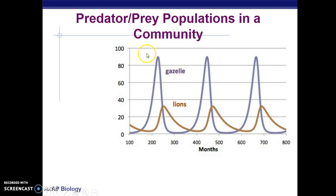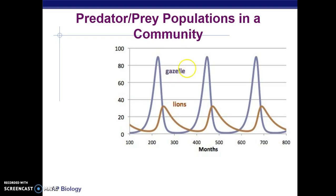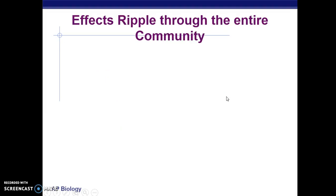If all the gazelles go down, the lions will have nothing left to eat. Similarly, if the gazelle population spikes and is no longer controlled by the lions, whatever the gazelles eat will go down. This constant equilibrium between lions and gazelles is important to keep the entire community stable.